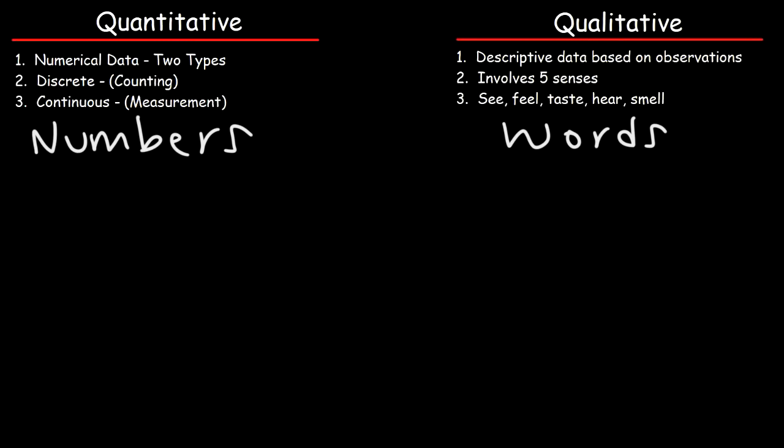So let's say the cat's fur is black. Is that quantitative or qualitative? Here we're dealing with color. There's no numbers here. And so this is dealing with the visual senses. We're seeing the color, and we are describing it using words. So this would fall under the category of qualitative data.